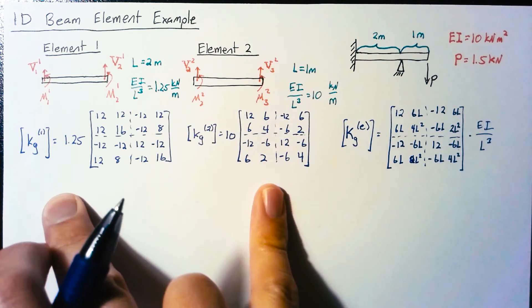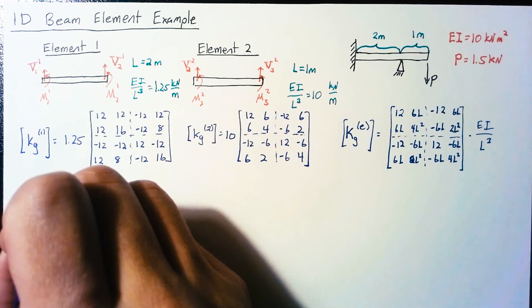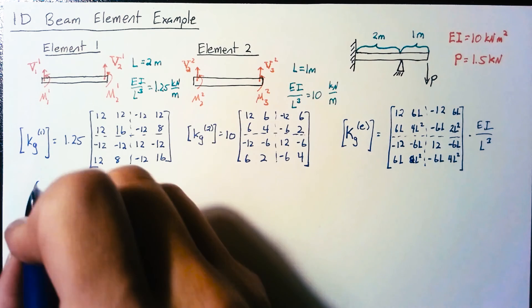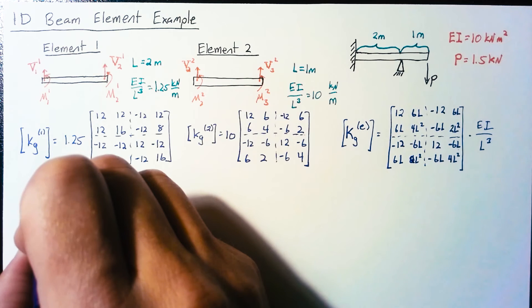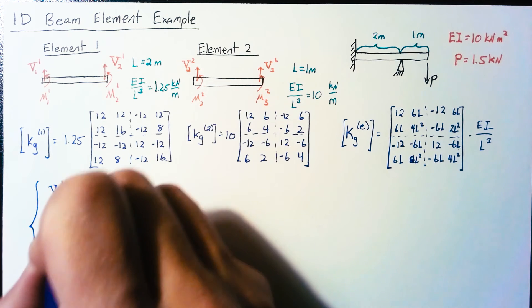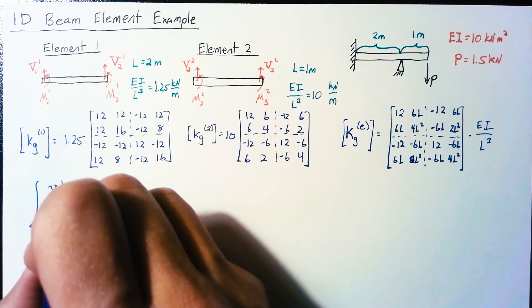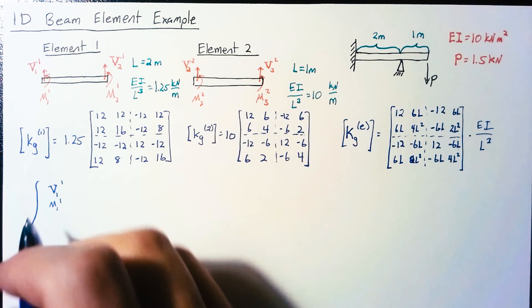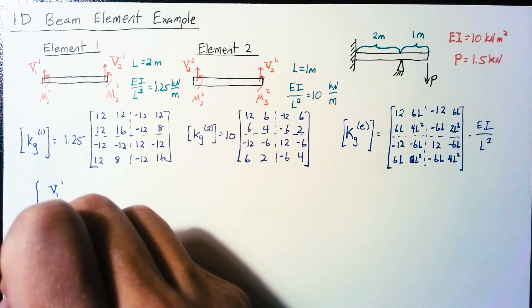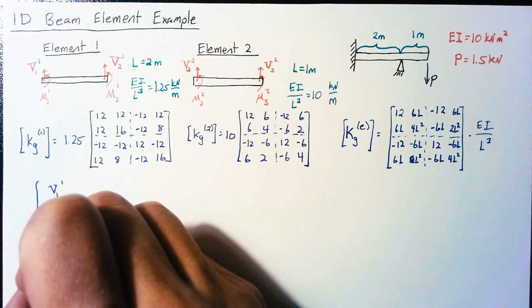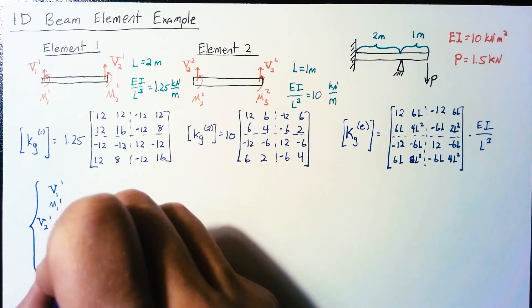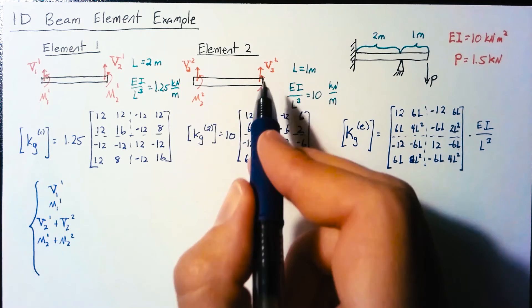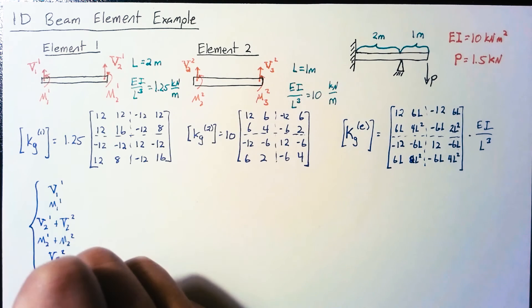The big step here is assembling everything. We have a large force vector six elements long. Forces on node 1 are only from element 1, so V1 at 1 and M1 on 1. For node 2 we have contributions from both elements: V2 at 1 plus V2 at 2, same for the moments.